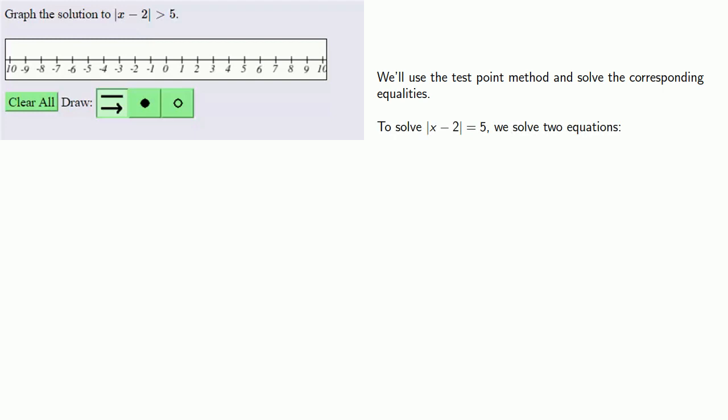To solve |x - 2| = 5, we solve two equations: x - 2 = 5 and x - 2 = -5. Solving these two equations separately gives us the critical values.